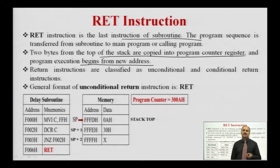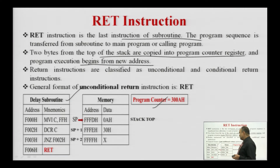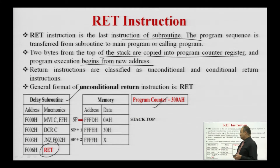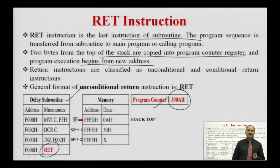Whenever the microprocessor executes the RET instruction, it picks the returning address from the stack. The returning address is loaded into the program counter and the processor starts execution from that particular memory location. This is the example of the delay subroutine — the last instruction of this subroutine is the RET instruction, which is the unconditional return instruction. Whenever the microprocessor executes the subroutine and reaches the RET instruction, the processor transfers control from the subroutine to the main program, picks the returning address, loads it into the program counter, and starts execution from that memory location.